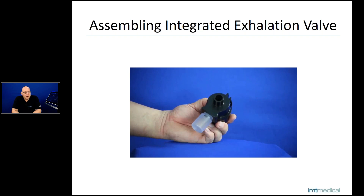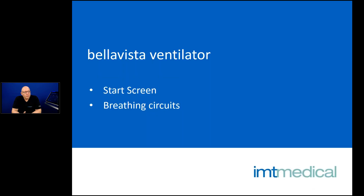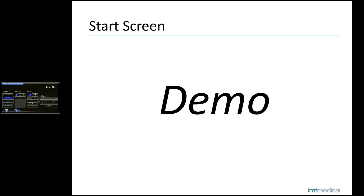Now we go to the ventilator start screen. On the left side of the start screen you see the last patient — the patient that was ventilated before you shut down Bellavista. Then we have the settings for the new patient, and the possibility to set up profiles. You can store up to 20 profiles, but on the start screen you can show three profiles at a time.